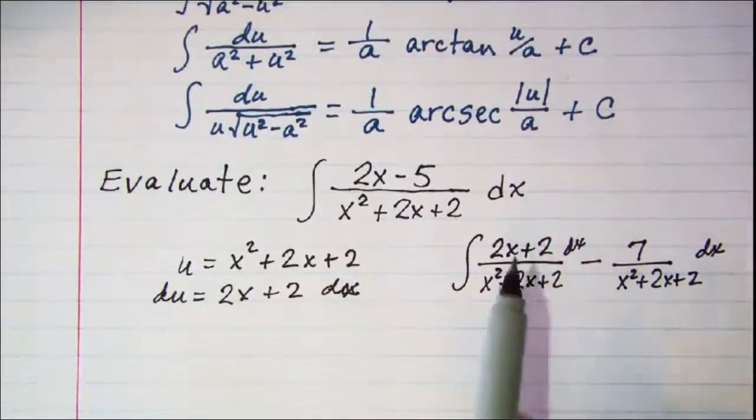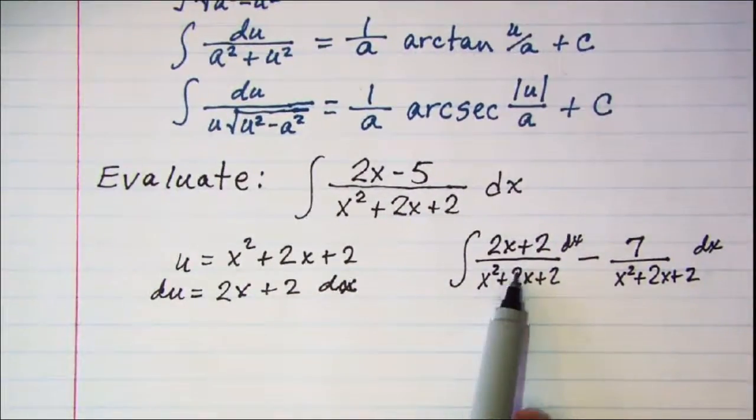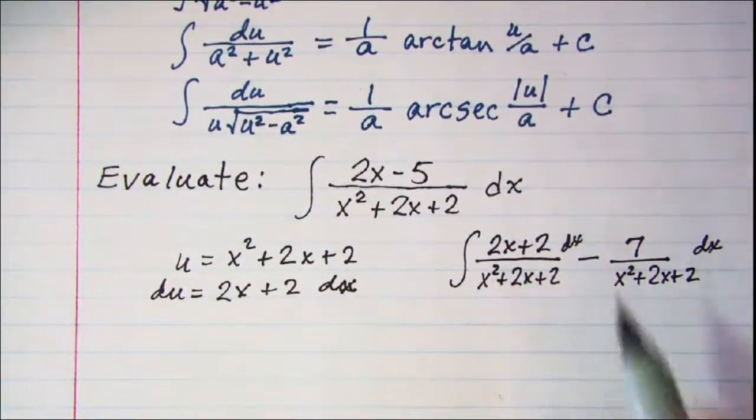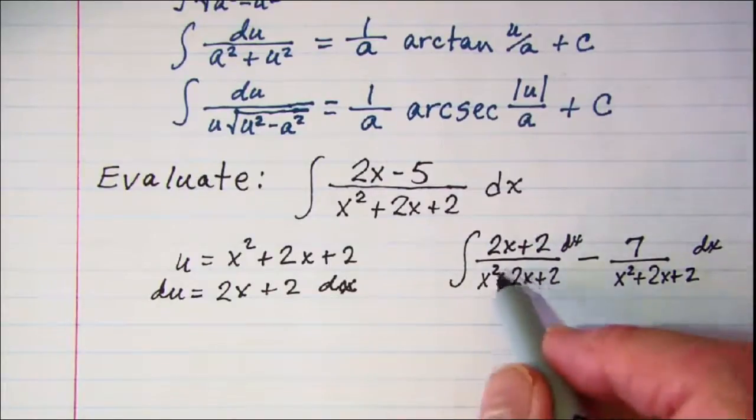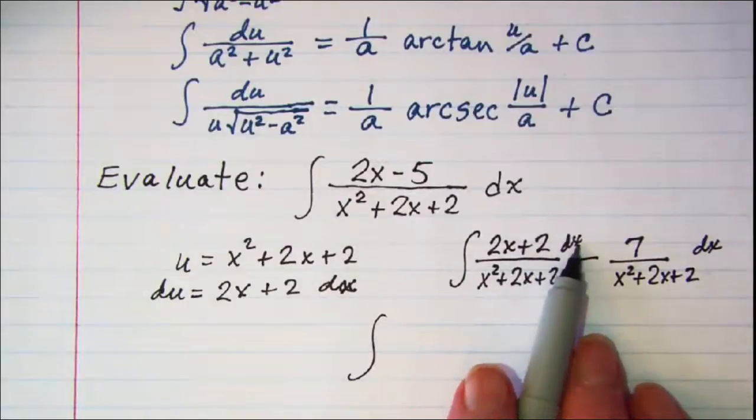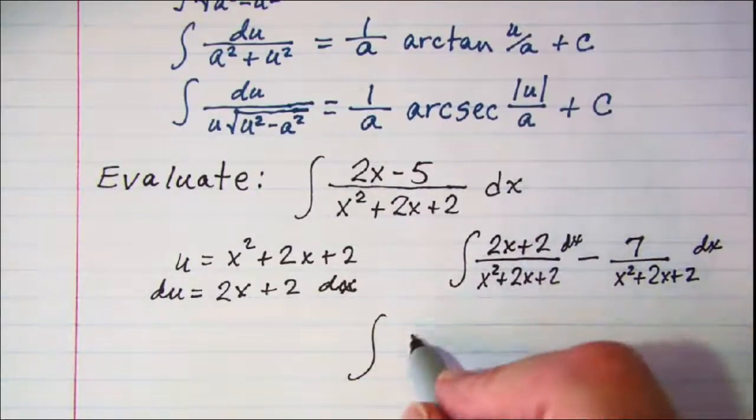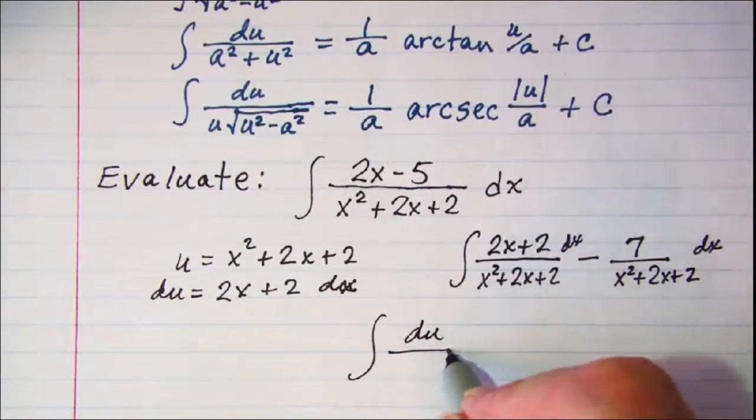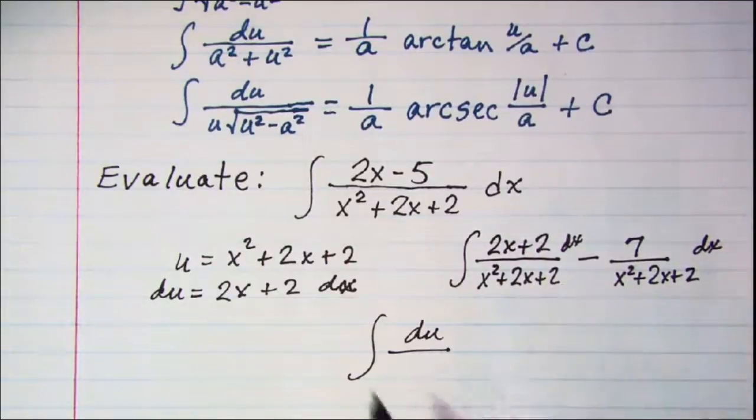So now I can do some substituting here on this first integral. I have the integral 2x plus 2 dx I can put in du and in the bottom that's just u.